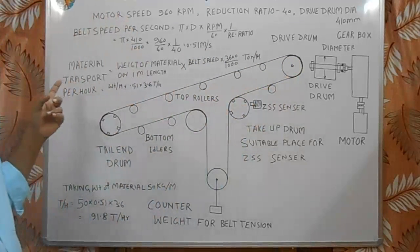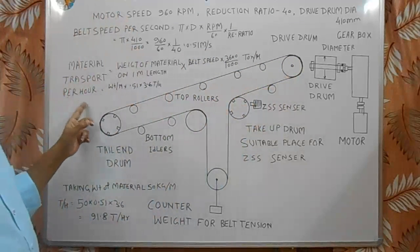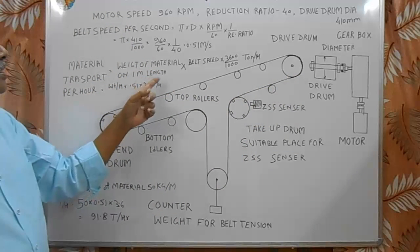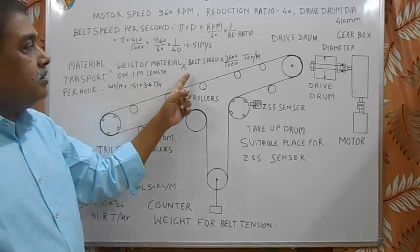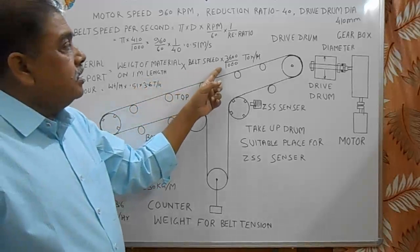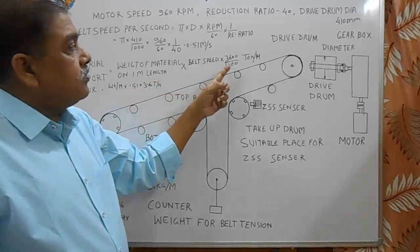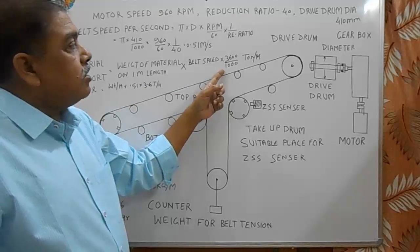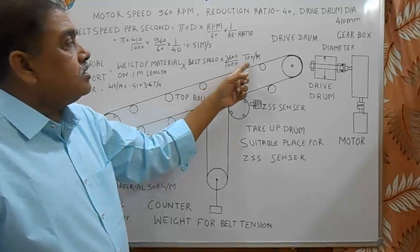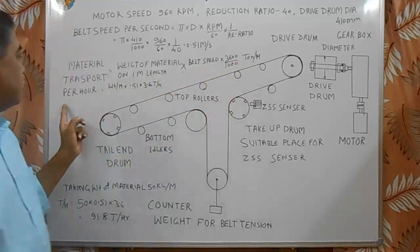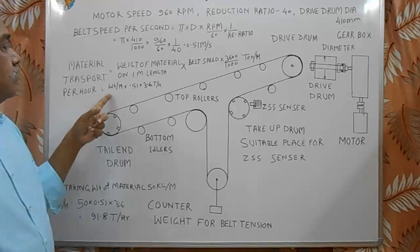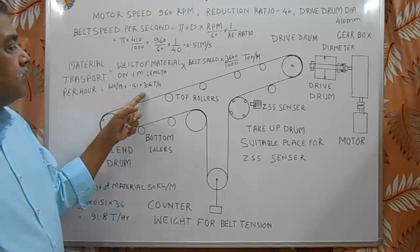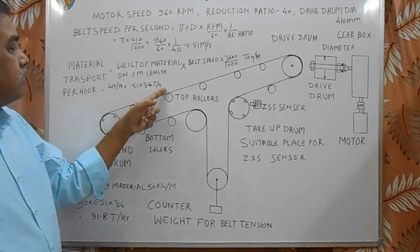So then material transported per hour is equal to weight of material on 1 meter length of the belt, multiply by belt speed into 3600 for 1 hour divided by 1000 to convert it into tons per hour. This is equal to weight per meter multiply by 0.51 multiply by 3.6 tons per hour.